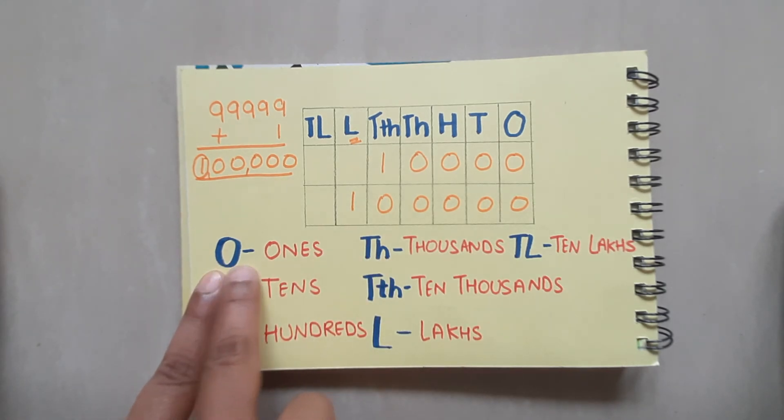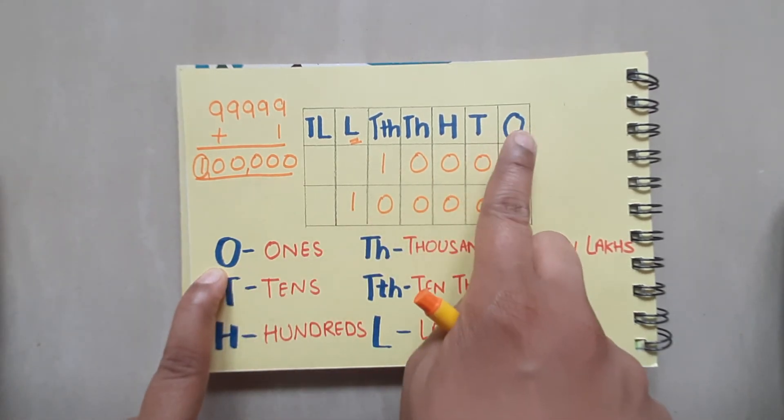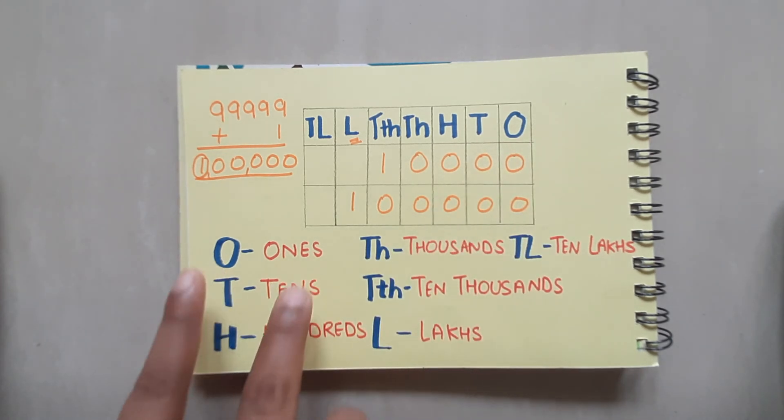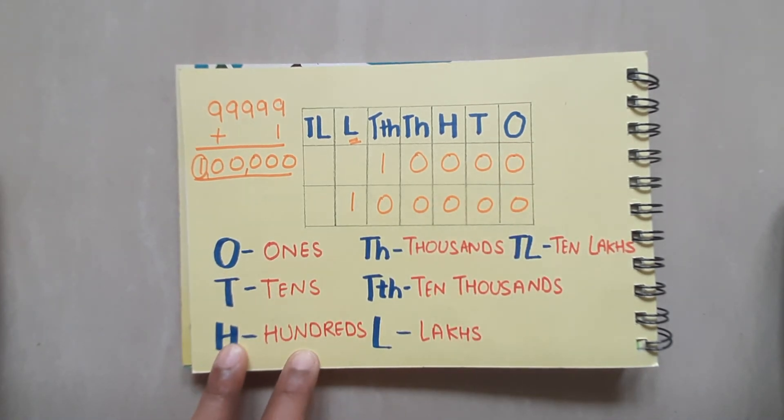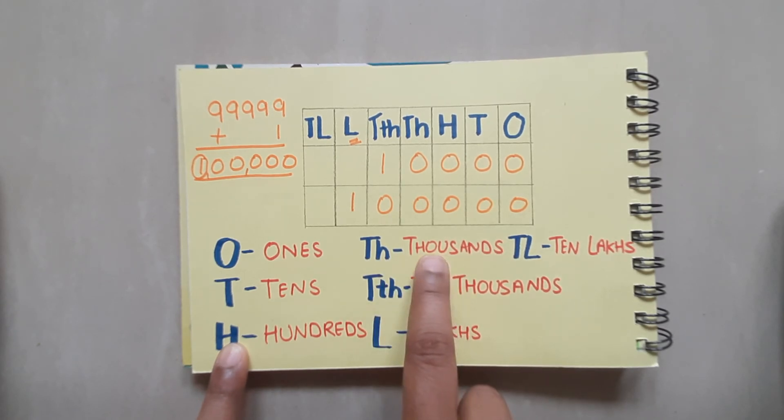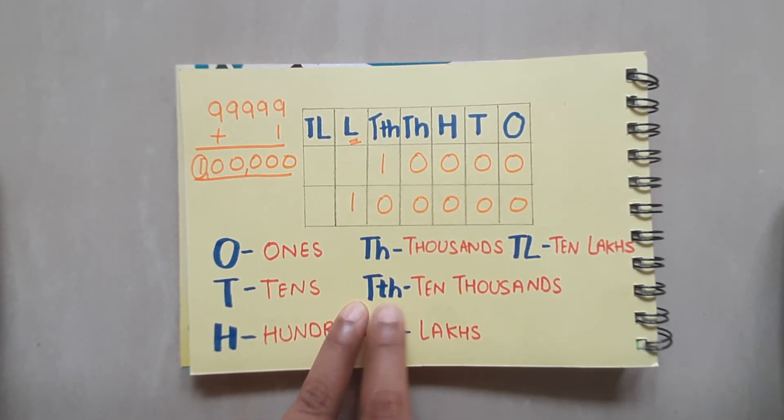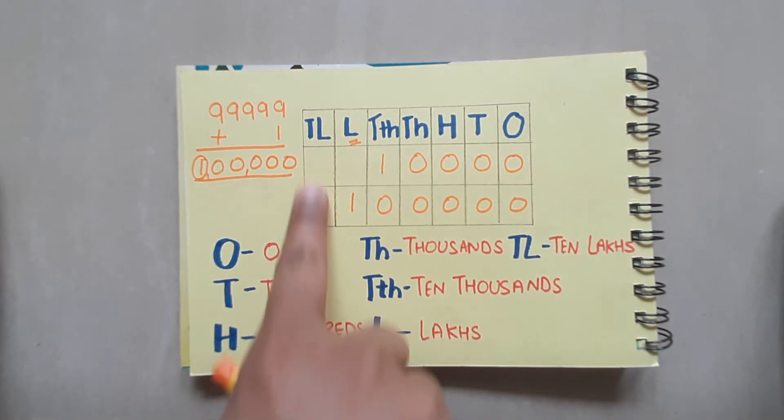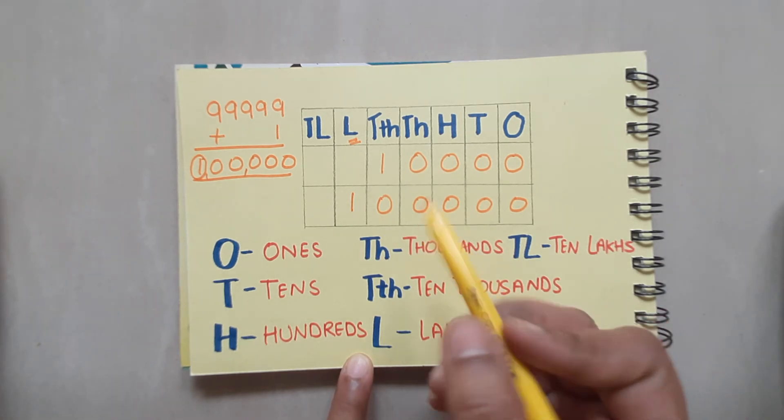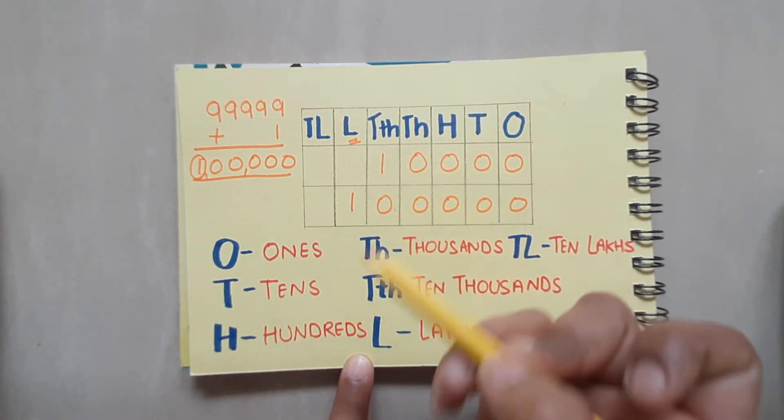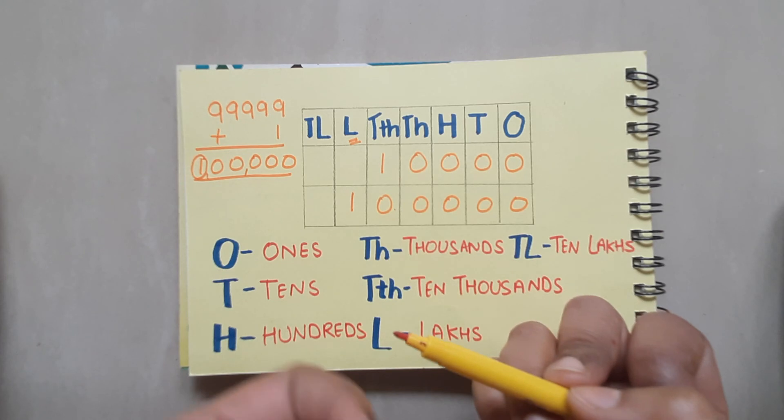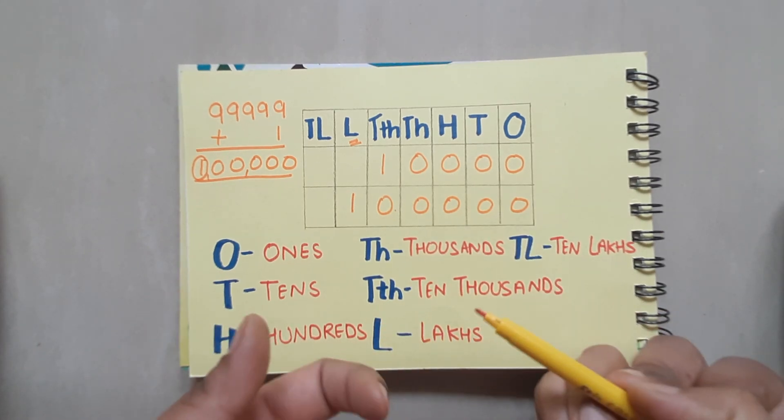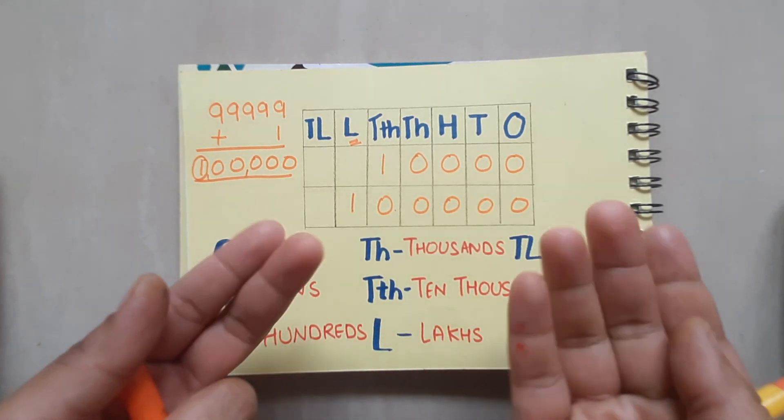Here, I have just written down the complete names of the places here. O means 1s, T means 10s, H means hundreds, TH means 1000s, and TTH is 10,000s, and L is lakhs. This is how your Indian place value chart looks like. And this is how we write the numbers in the place value chart so that we know what is the place of a particular digit in a place value chart.